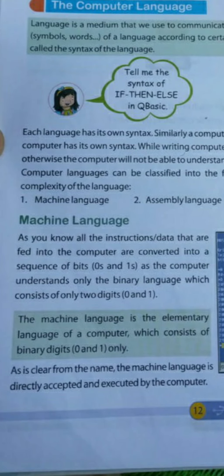The first one is machine language. Machine language means instructions or data that are fed into the computer are converted into sequences of bits, as the computer understands only binary language, which consists of only two digits: zero and one. At the time of early first and second generation computers, a computer is a kind of machine which can understand only one language, called binary language, and in that language there are only two characters — zeros and ones. Zero refers to off and one refers to on.